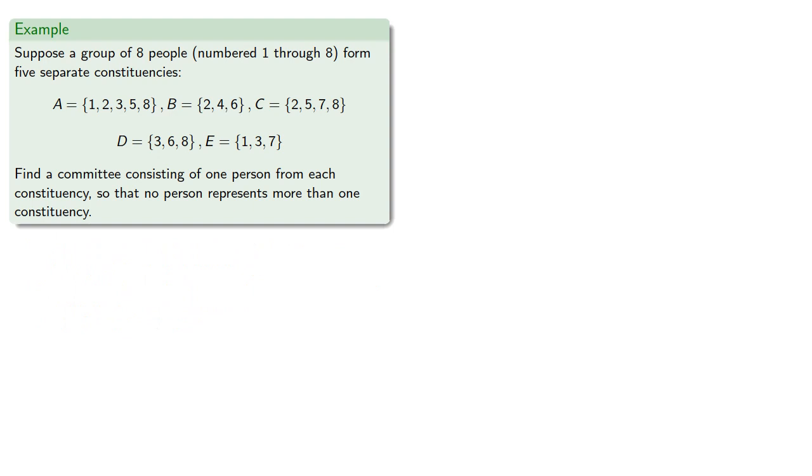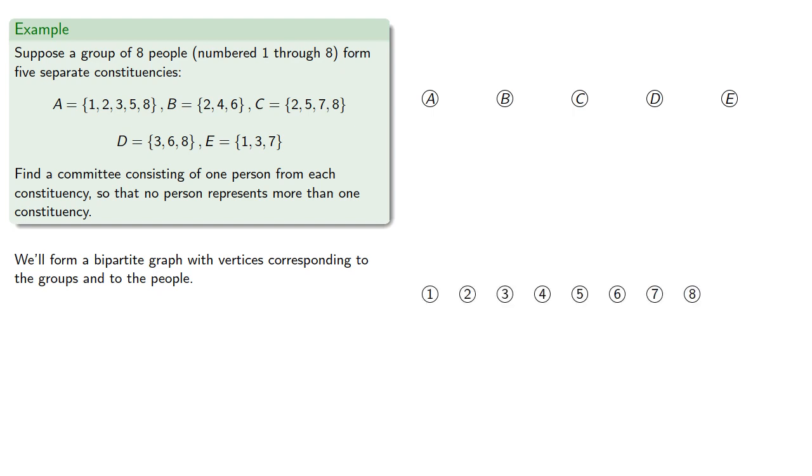For example, suppose a group of 8 people, which will number from 1 to 8, form 5 separate constituencies. We want to find a committee consisting of 1 person from each constituency so that no person represents more than 1 constituency. So, we'll form a bipartite graph with vertices corresponding to the groups, A through E, and to the people, 1 through 8.